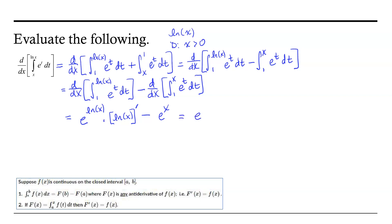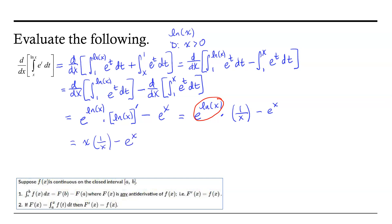Continuing on, we have e to the ln(x) times the derivative of ln(x), which is 1/x, minus eˣ. Now, the exponential base e and the natural log are inverse functions, so e to the ln(x) simplifies to just x. That gives us x times 1/x minus eˣ, and x times 1/x simplifies to 1, giving us 1 minus eˣ.